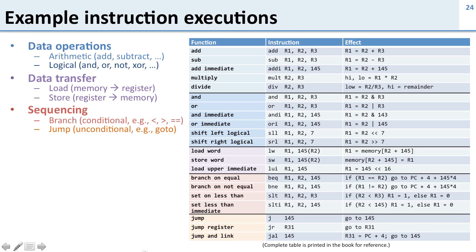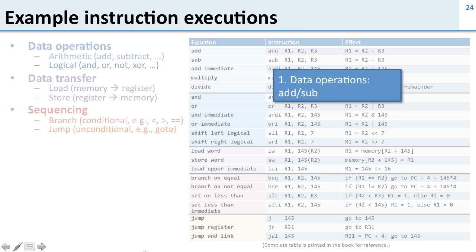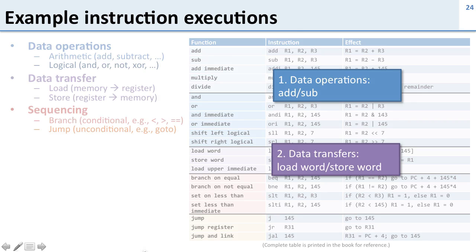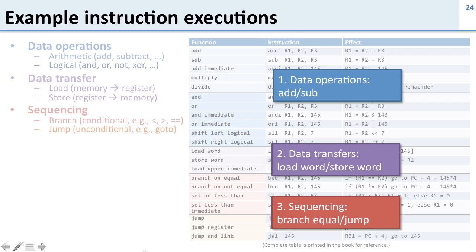Now we're going to talk about how some of the MIPS instructions really work. We went through this before and we said there were three types of instructions: data operations such as addition and subtraction, data transfer instructions like load word and store word, and finally sequencing branch and jump instructions. Now we're going to take a look at them in detail.